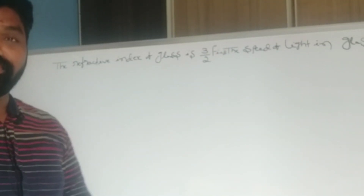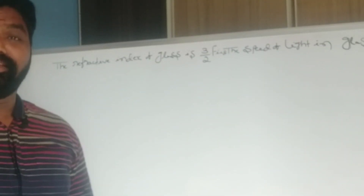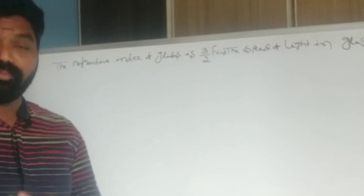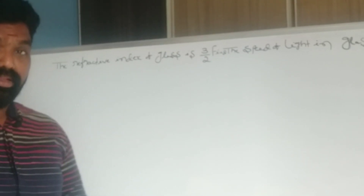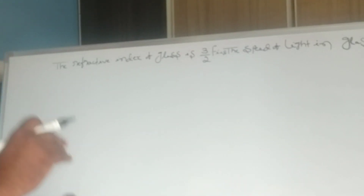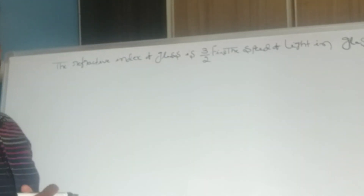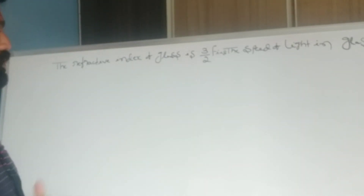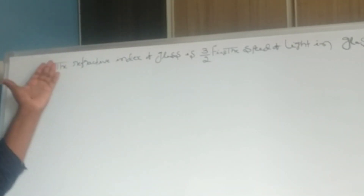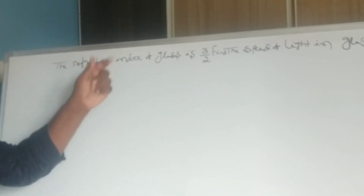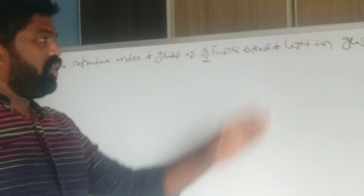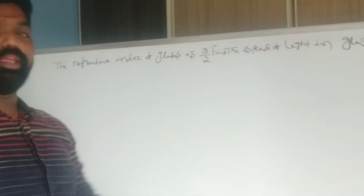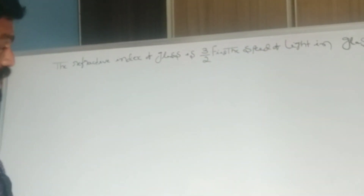Now we are going to discuss some problems in refraction of light at plane surfaces. The given statement is: the refractive index of glass is 3/2. Find the speed of light in glass.